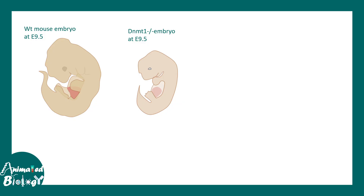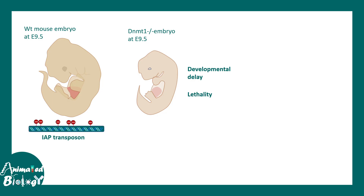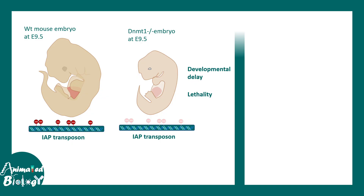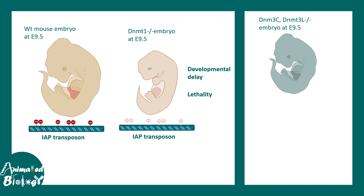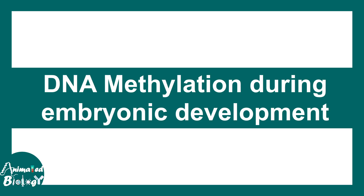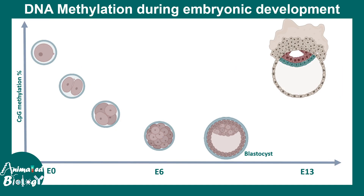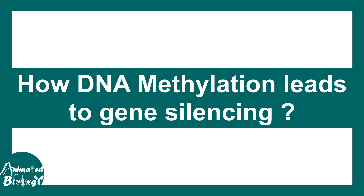DNA methyltransferases are super important and this is understood from embryonic experiments in rodents. A mouse with a mutation in DNMT1 has developmental defects and ultimately leads to lethality, because transposons are not properly methylated, leading to altered chromosomal translocation. Similarly, DNMT3 mutants have problems in testicular development and eventually show meiotic failures. DNA methylation during embryonic development fluctuates dramatically — from E0 to E13 through the blastocyst stage, CpG methylation decreases dramatically, but after implantation of the blastocyst, methylation percentage increases again.